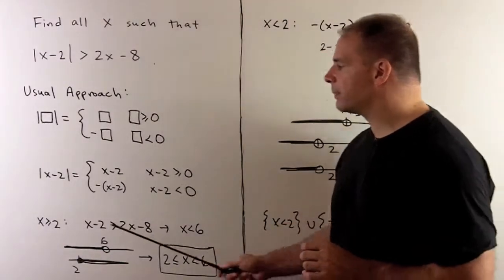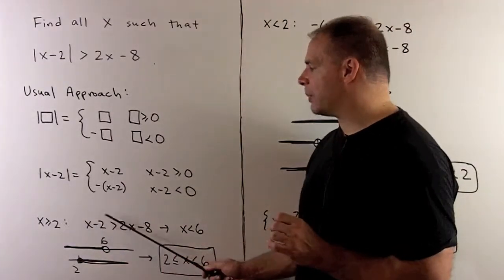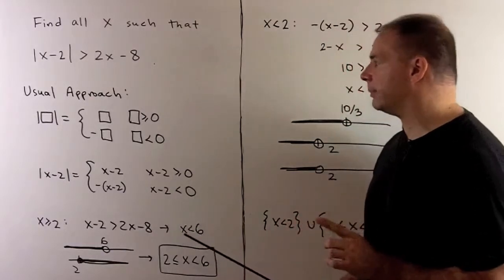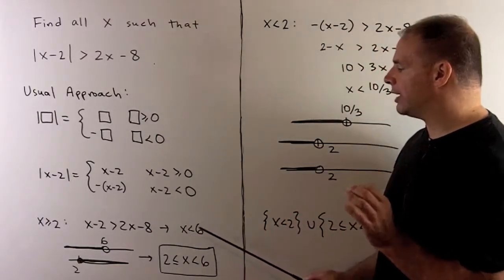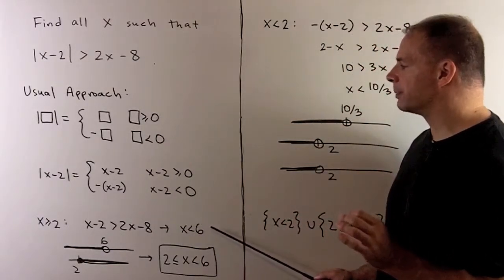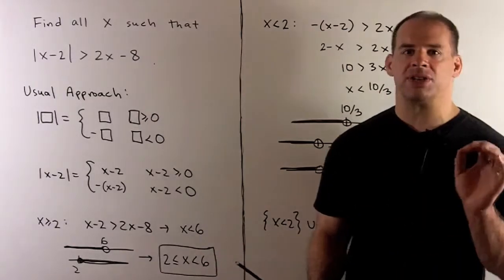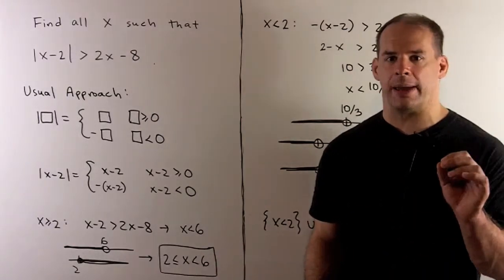In the first case, we'll solve x minus 2 greater than 2x minus 8. That's going to give me x strictly less than 6. But for our answer, we have to consider both inequalities at the same time.